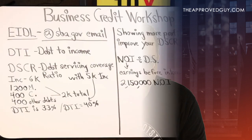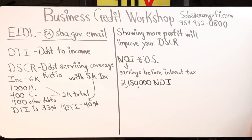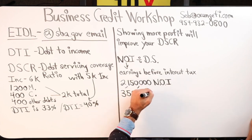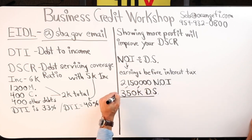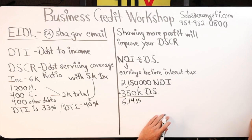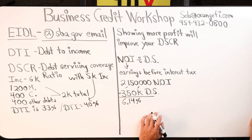If your net operating income is $2,150,000 a year and the debt you're servicing is $350,000 a year, you take $2,150,000 divided by $350,000 and that gives you 6.14 — a 6.14 debt service coverage ratio. You are solid. You're going to get pretty much what you're looking for because there's a lot more revenue than debt in that scenario.